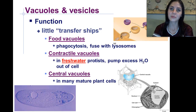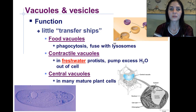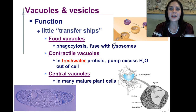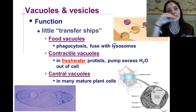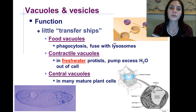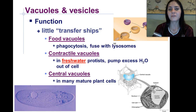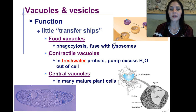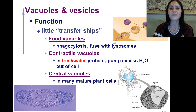The last two types of organelles we're going to talk about are vacuoles and vesicles, which function as little transfer ships transporting different things around. We have food vacuoles, which use phagocytosis and fuse with lysosomes. We also have contractile vacuoles, which occur in freshwater protists and are used to pump excess water out of the cell.